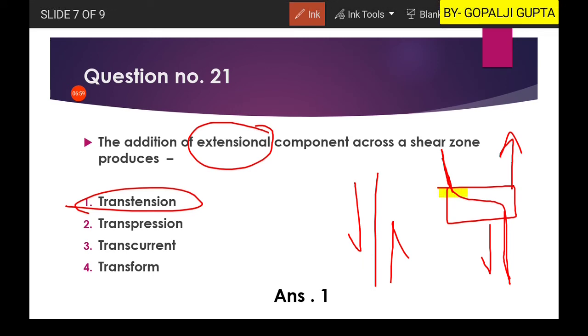In such a condition where you have the transtension condition, you will have a structure which is known as flower structure. If you want to know more about the flower structure, just click on the i button on the above and you will get a separate video for the flower structures related to the transtension and transpression.